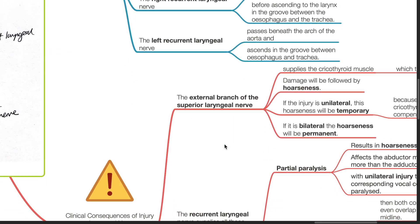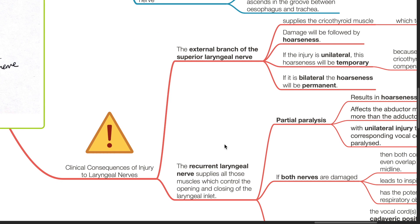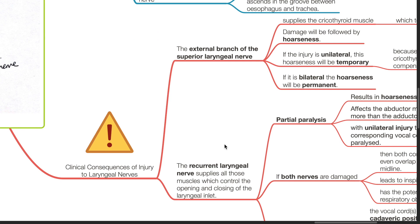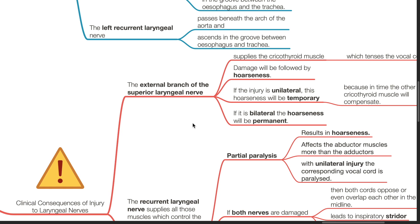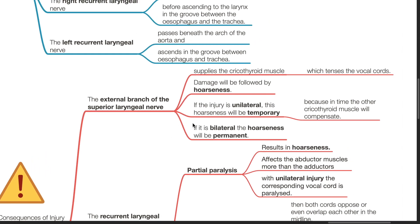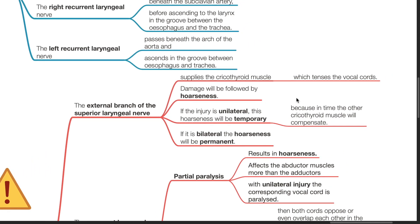Clinical consequences of injury to the laryngeal nerves: the external branch of the superior laryngeal nerve supplies the cricothyroid muscle, which tenses the vocal cords. Damage will be followed by hoarseness of voice. If the injury is unilateral, this hoarseness will be temporary because in time the other cricothyroid muscle will compensate. If it is bilateral, the hoarseness will be permanent.